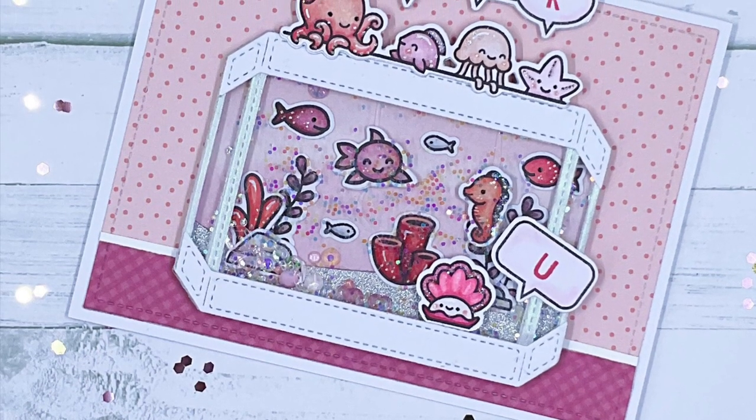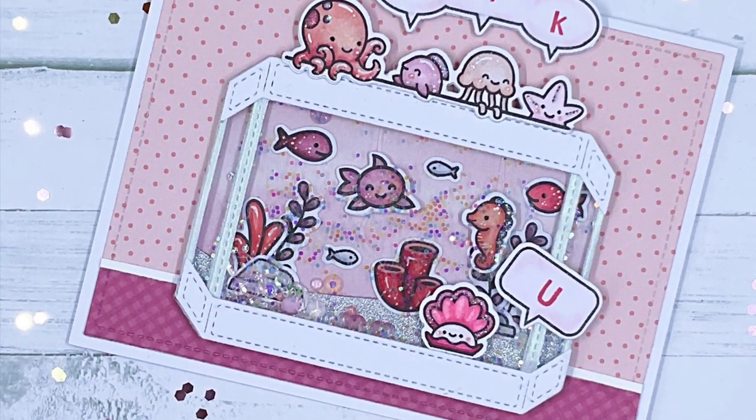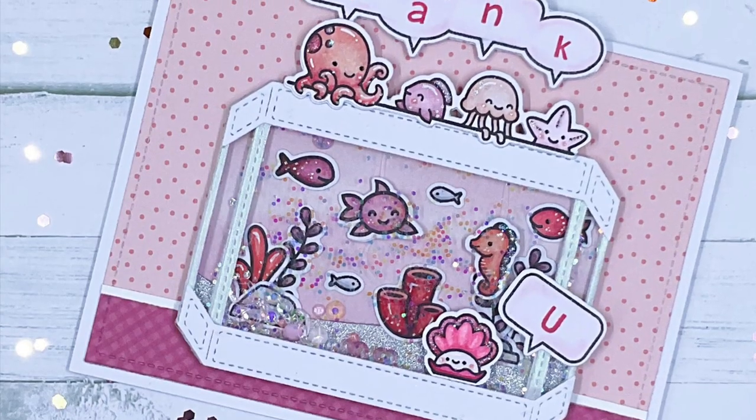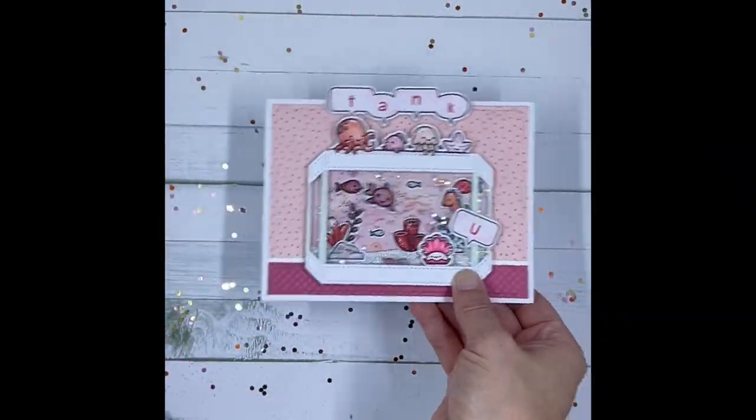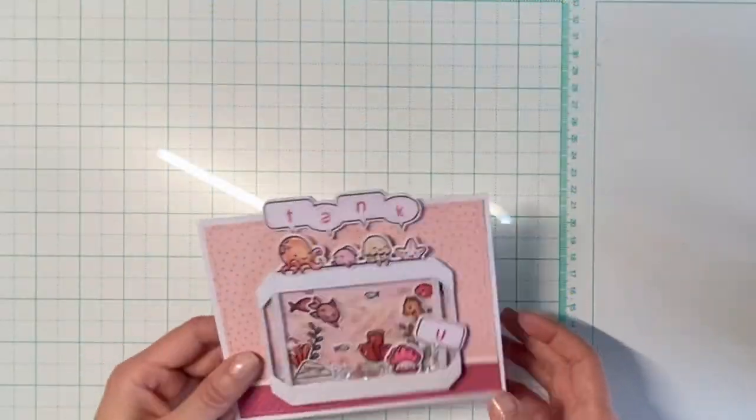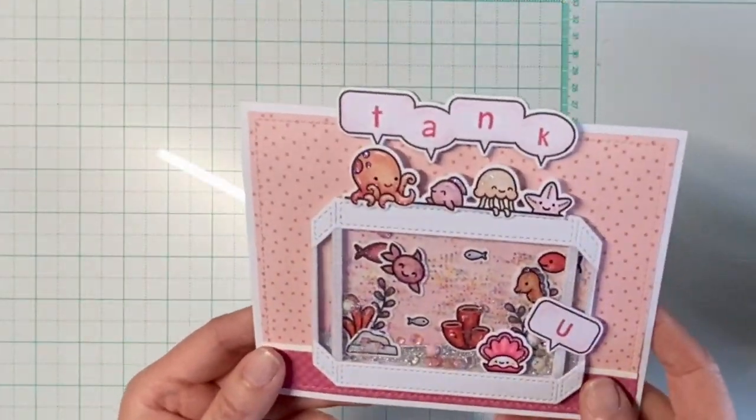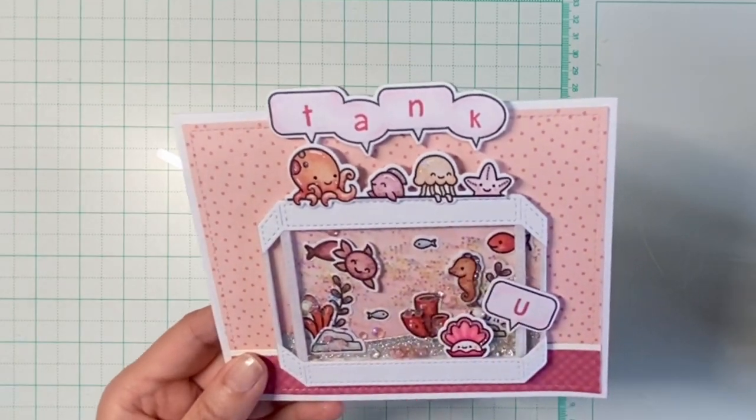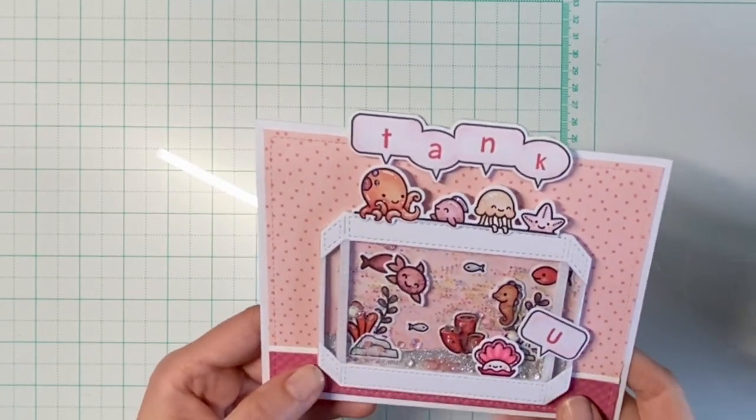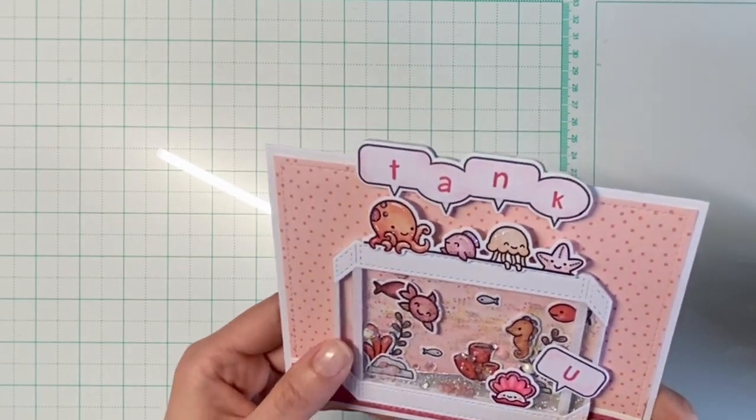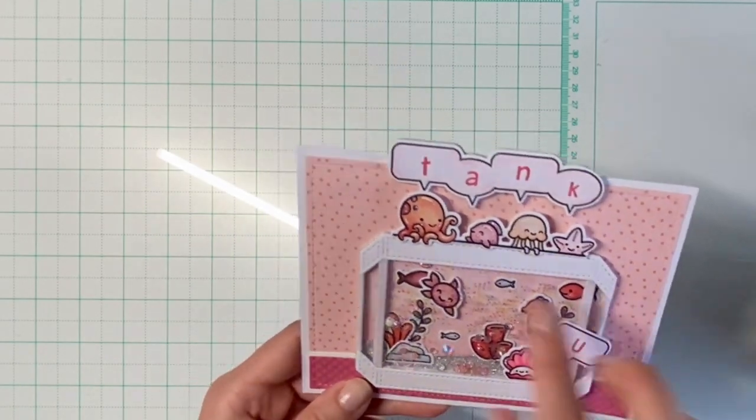Hey friends, thanks for stopping by. I created this magic shaker card using Lawn Fawn's Built an Aquarium along with ocean-themed stamp sets. The magic shaker is something I learned from Jennifer McGuire and she did a whole tutorial on these types of cards. I will link to her video in the description box.